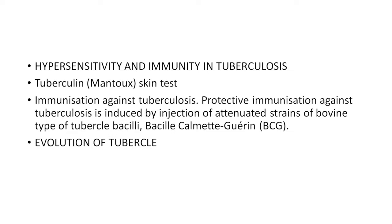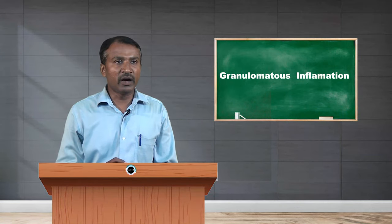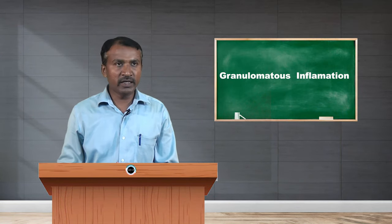Hypersensitivity and immunity in tuberculosis is assessed mainly using the tuberculin skin test, also called the Mantoux skin test. Protective immunization against tuberculosis is induced by injection of attenuated strains of bovine type tubercle bacilli, called Bacille Calmette-Guérin, or BCG.